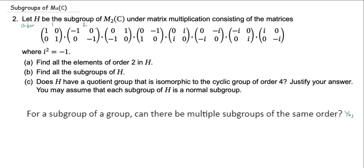It's going to turn out that negative I is the only element of order 2 in H. If we call this capital I for the identity element, squaring negative I gives you positive I — the negatives cancel and I squared equals I. So negative I is the only element of order 2. Now, why not the other ones? I'm going to do a little bit of labeling: I'll call this one J, this one K, and this one L.